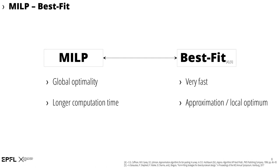The heuristic is an algorithmic process that aims to produce a solution based on an iterative application of practical rules. Such an iterative procedure can be carried out very fast in computation time. As a trade-off, a heuristic cannot provide any information on solution optimality. A well-known heuristic is the best-fit algorithm. In this work, this algorithm is adapted to obtain an optimal assignment of either reclaimed or new elements to member positions of the structure, subject to element length and capacity constraints.